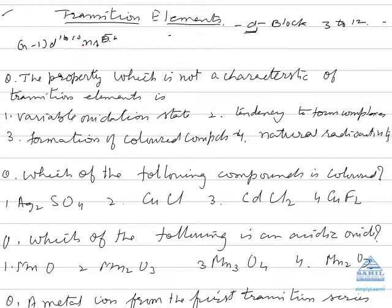Transition elements show standard characteristics. They are all metals because they have only one or two electrons in the outermost orbit which they can readily lose. They are hard and have high melting points because in addition to metallic bonding from outermost electrons, they have covalent bonding due to half-filled d orbitals.